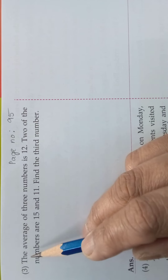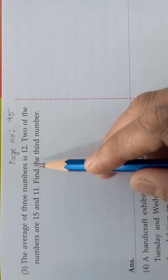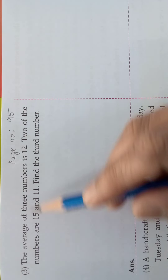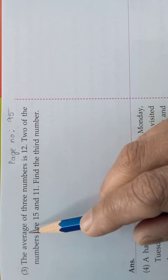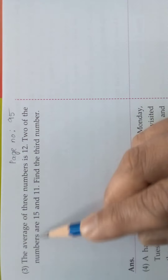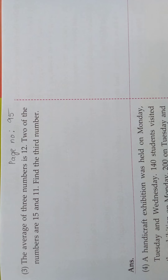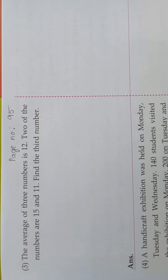Take page number 95. See - the average of 3 numbers is 12. Here no need to find the average; they have already given it. 2 of the numbers are 15 and 11. So we should find the third number. Come, we will see how to find the third number.